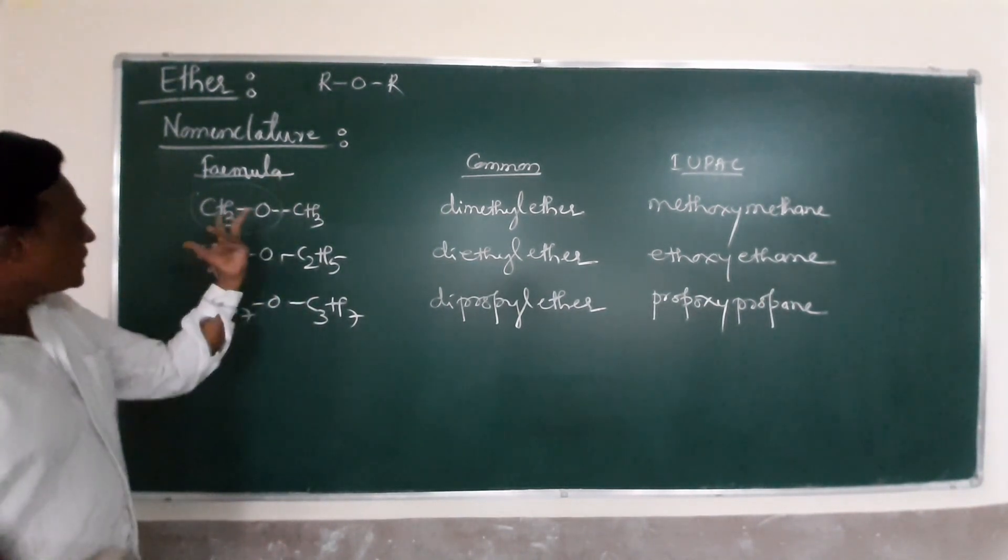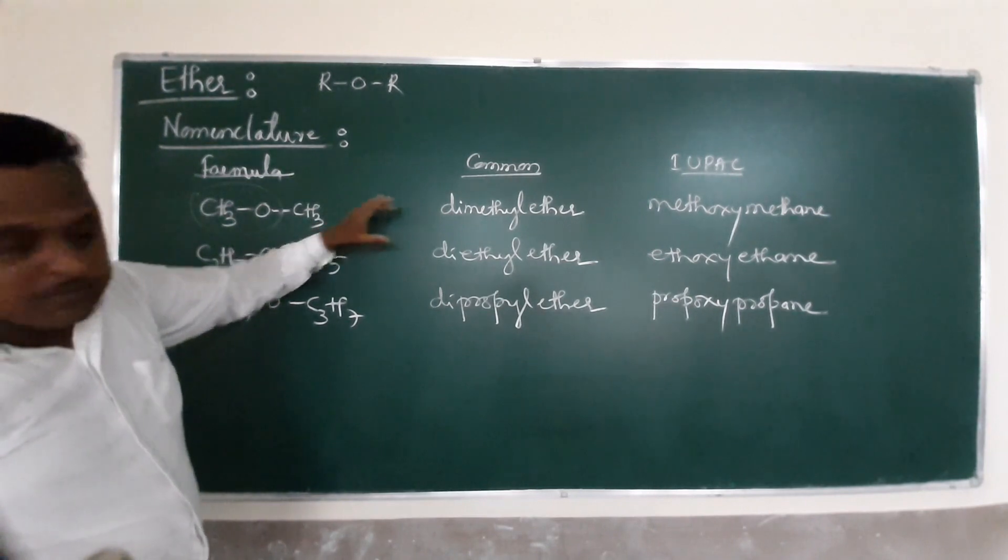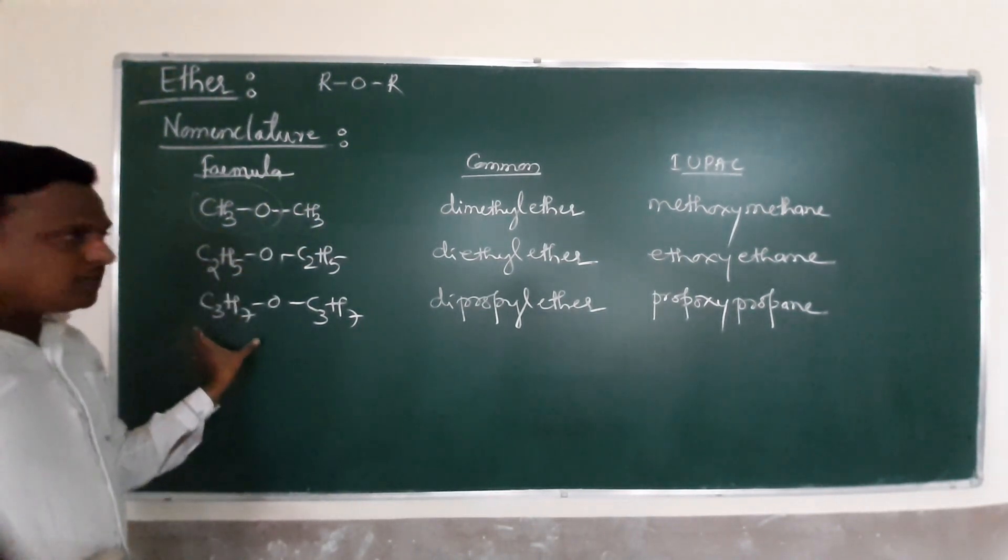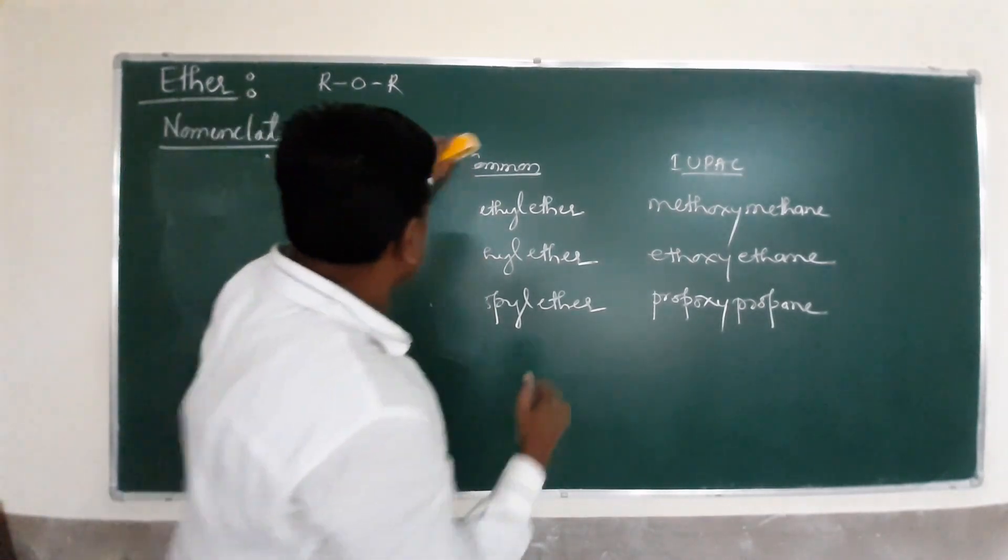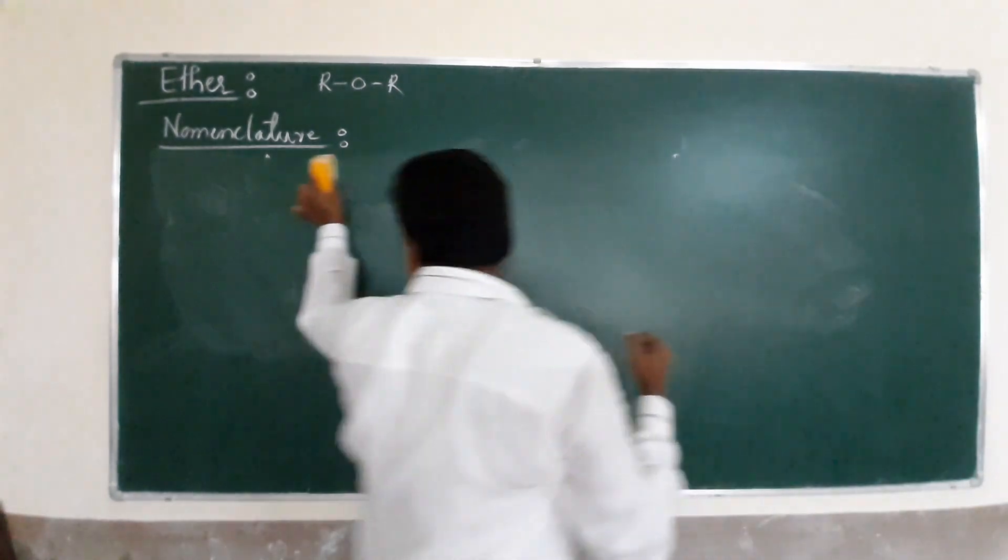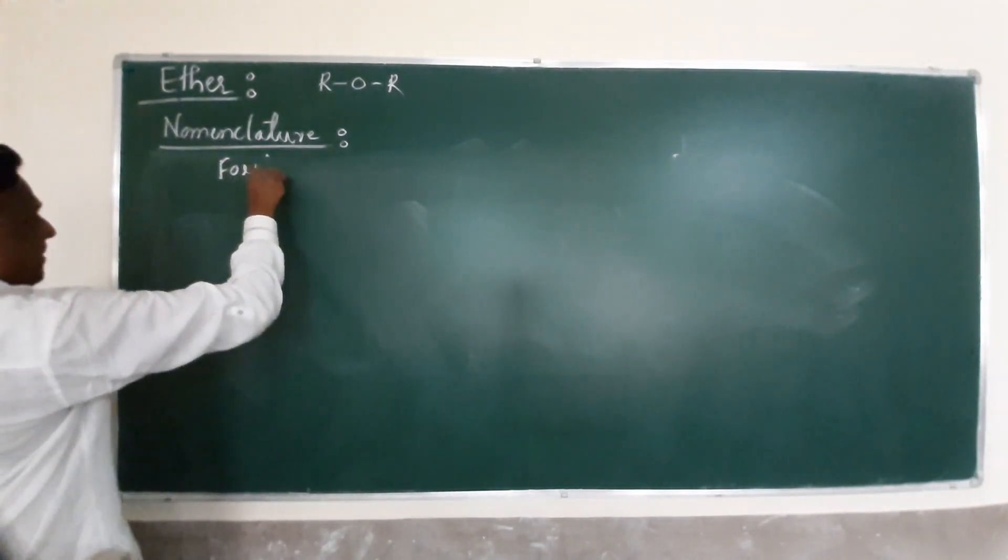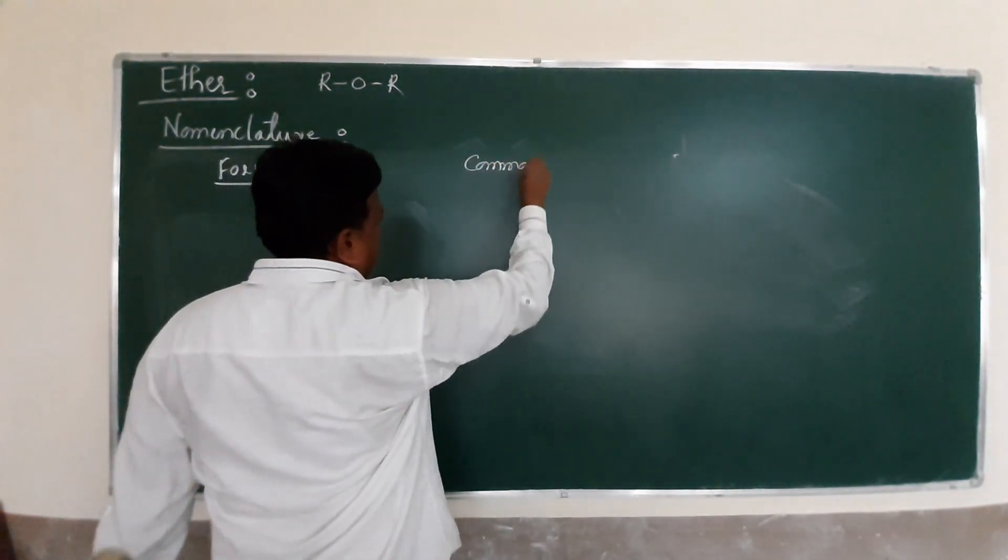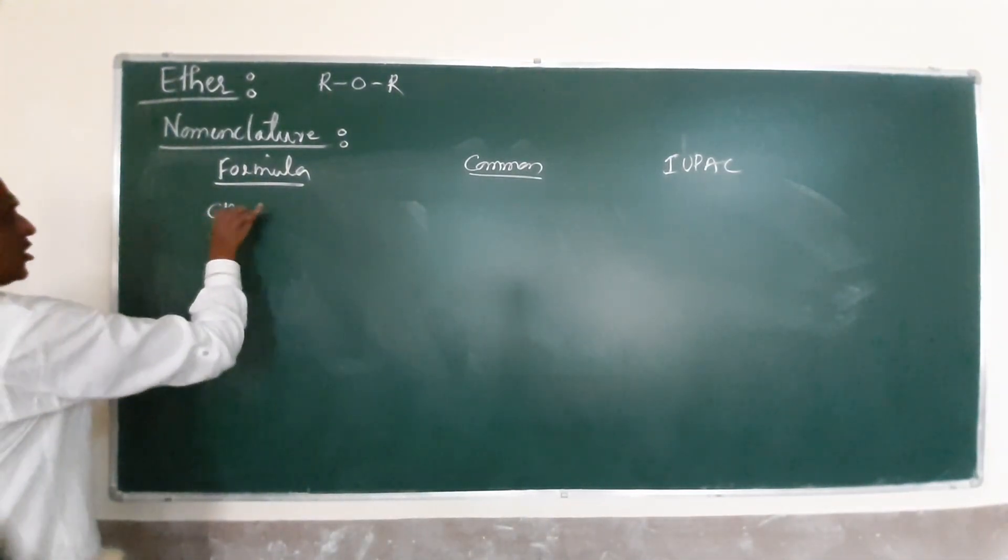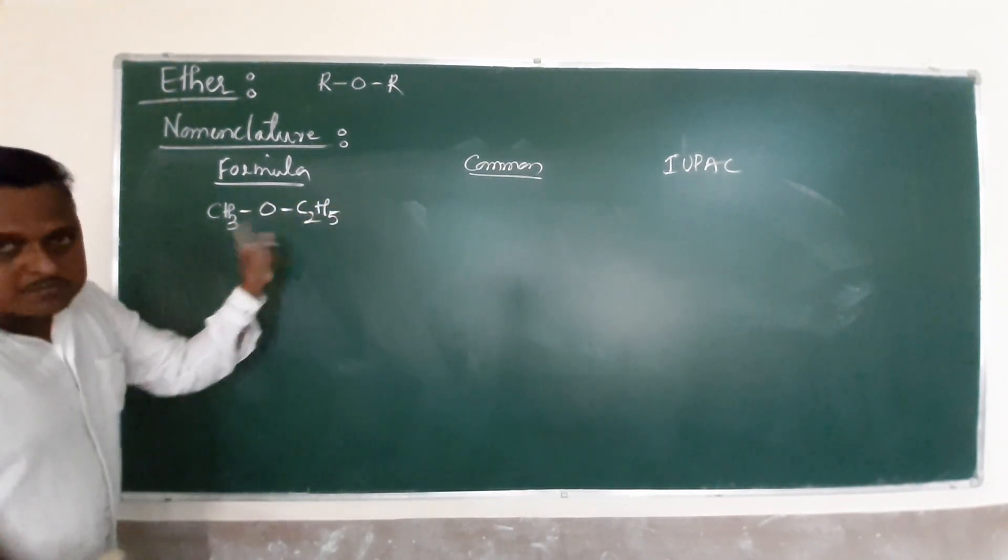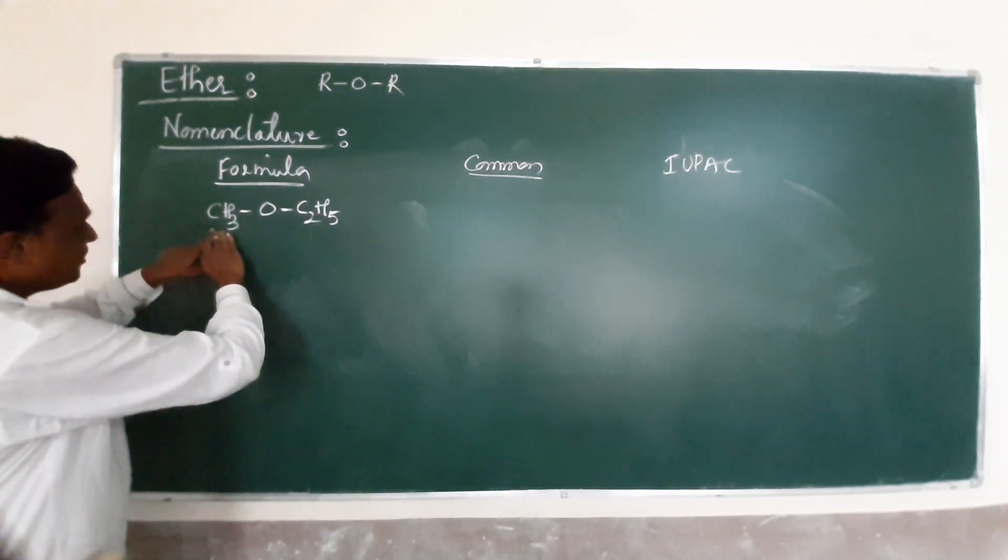But a little problem starts when your compound has an asymmetric formula. Consider the formula CH3-O-C2H5. This is asymmetric - both chains might be different now. It is completely dependent upon the alphabet. Methyl is M, ethyl is E. Ethyl comes first, methyl comes next.